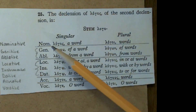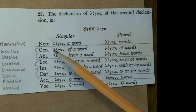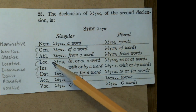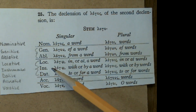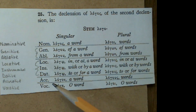I will list all of these for you. We have the nominative, genitive, ablative, locative, instrumental, dative, accusative, and vocative.